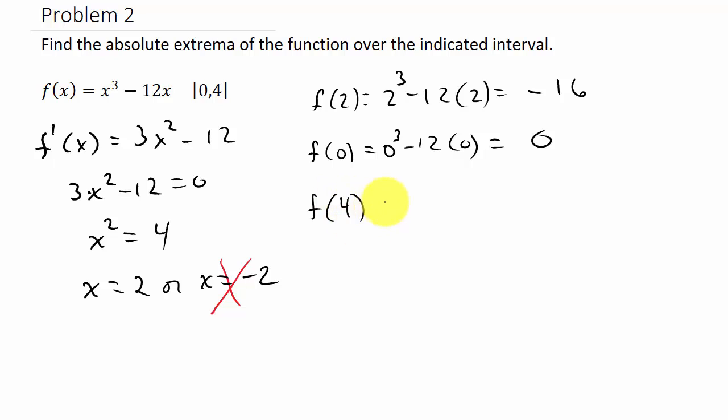f(4) is equal to 4³ - 12 times 4. And that is going to give us—4 cubed, that's 64 - 48. That gives us positive 16.